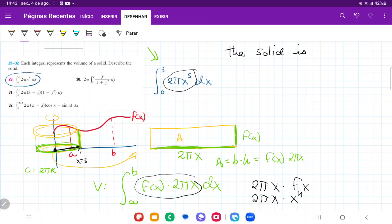we can see that f of x must be the curve x is equal to, sorry, y is equal to x to the power of 4. So we can say here that the solid is the curve y is equal to x to the power of 4.